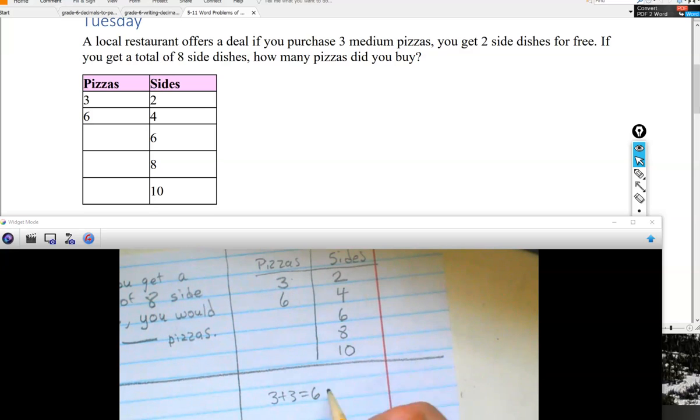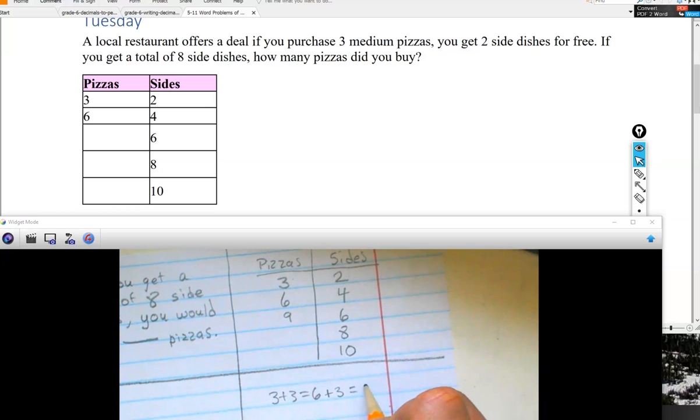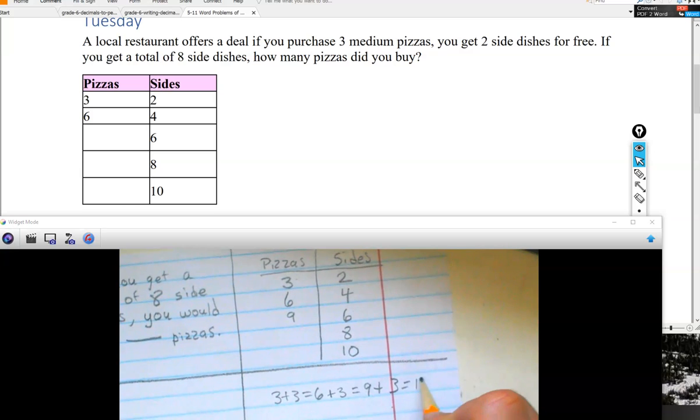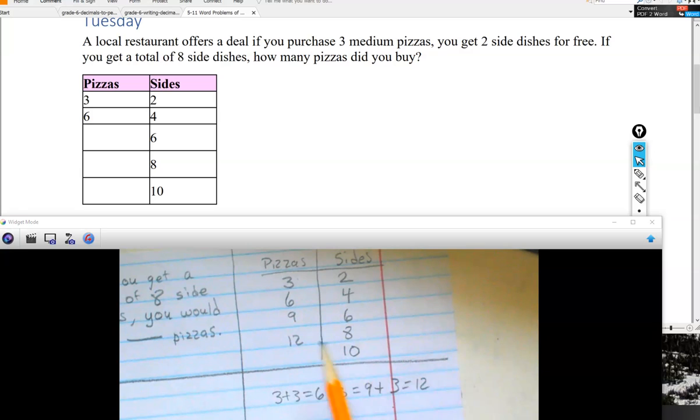So six plus three is nine. And then we're going to go ahead and add three more to that. And then we'll end up with 12 pizzas. So 12 pizzas, you get eight sides. That's one way you could do this.